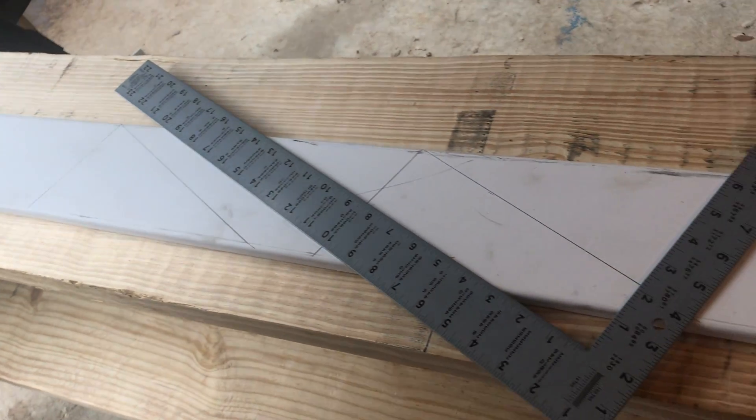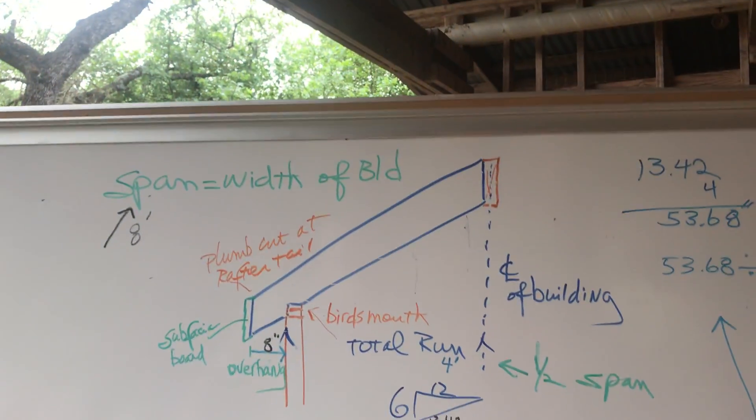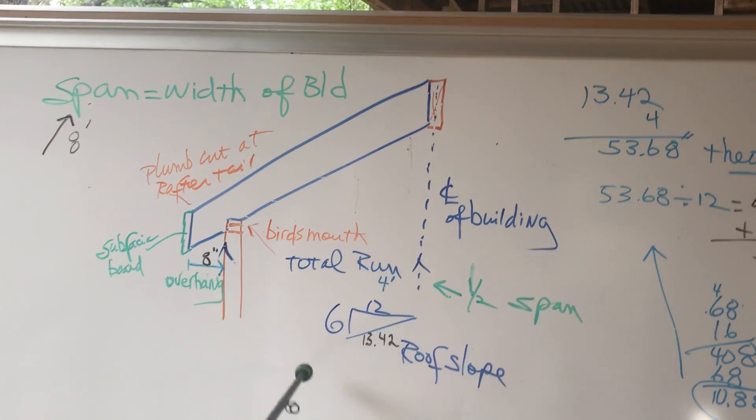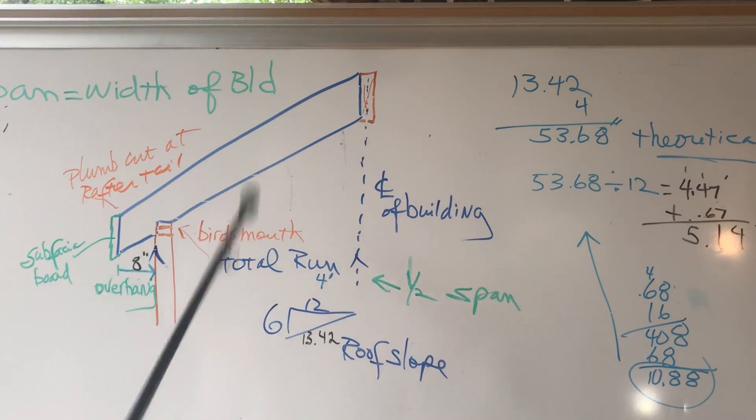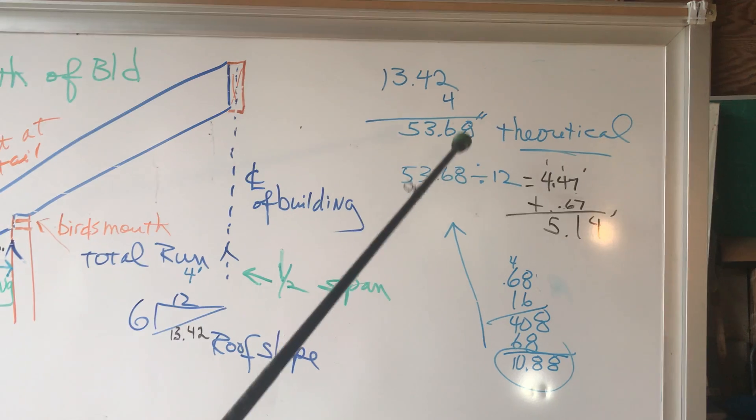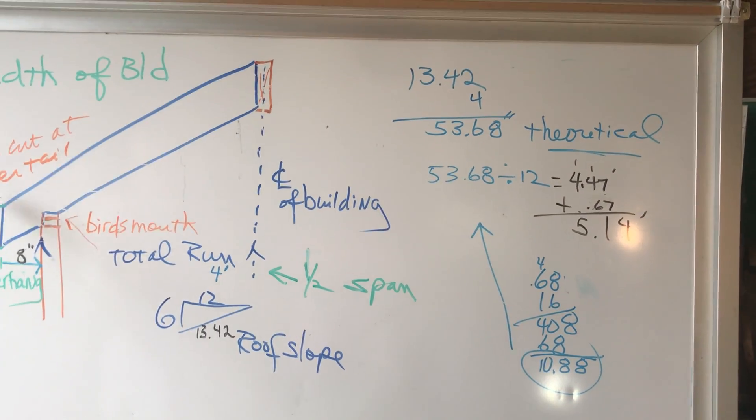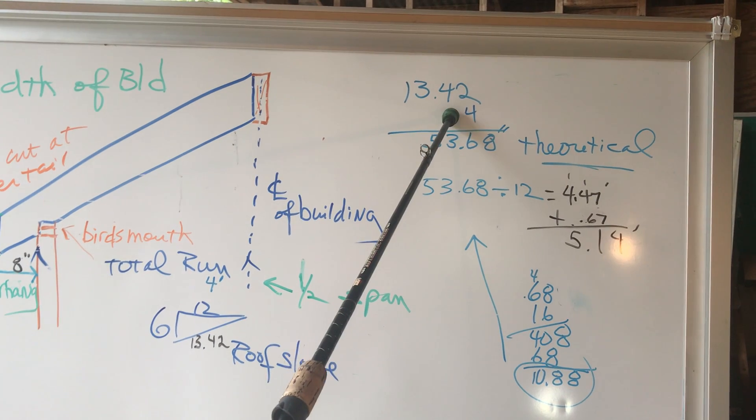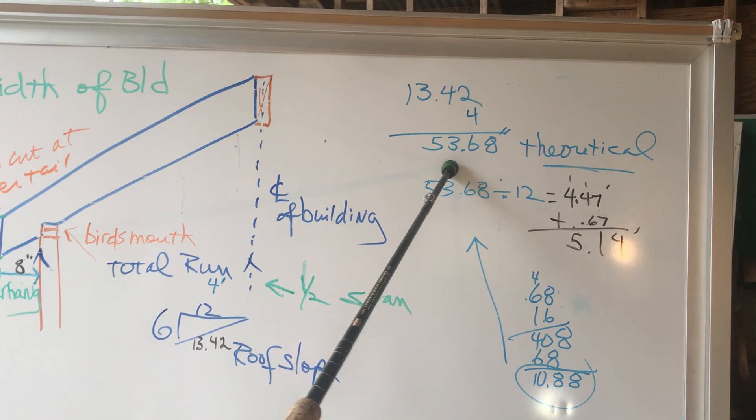So, let's go back over this somewhat. Remember, I told you a while ago that 13.42 was the rafter length in a 6-12 roof slope. Well, I have 4 units of that. So, 4 units of rafter length at 13.42. 13.42 times 4 is 53.68 inches.